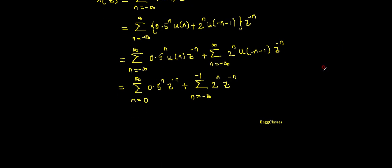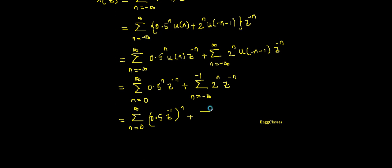I can simplify this further using the concept of geometric series. That is equal to summation from n equal to zero to infinity of 0.5 times z to the power minus 1, taking n out from those two terms. For the second term, since I want positive limits to make use of the geometric series, the result becomes 2 to the power minus n times z to the power n, and I take n out.